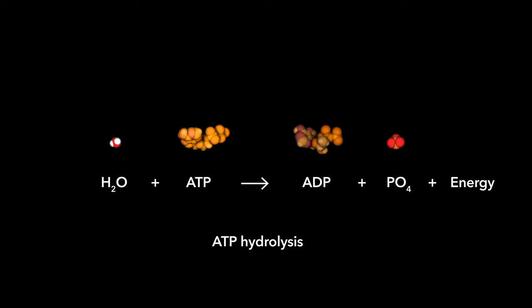Energy is released when the bond holding the end phosphate group is broken, converting ATP to ADP through a water-consuming hydrolysis reaction.